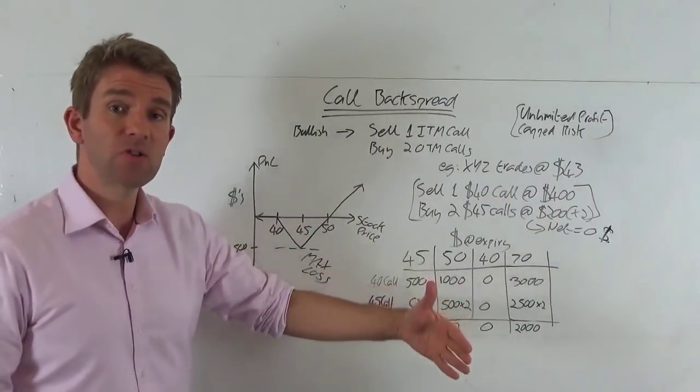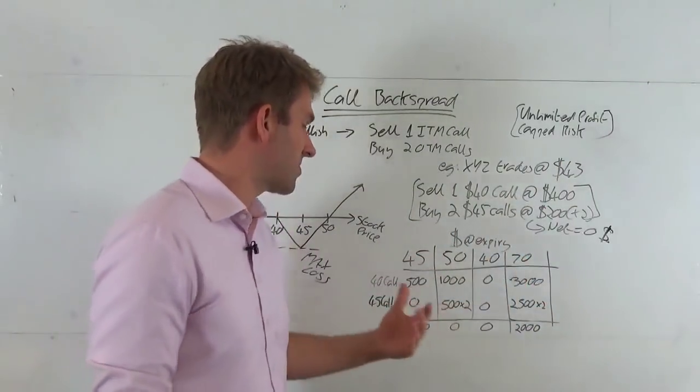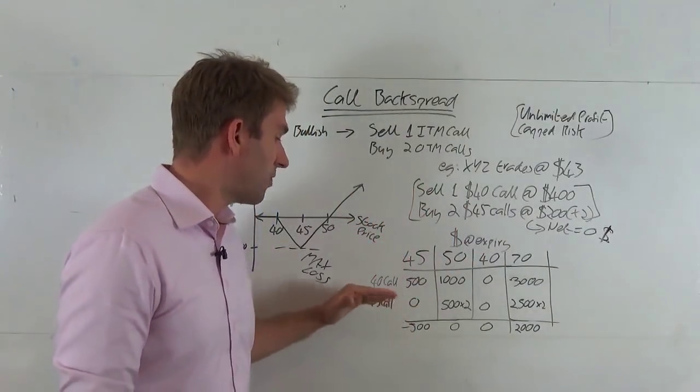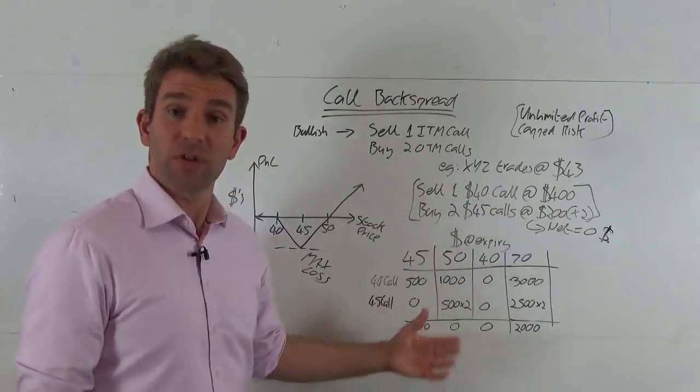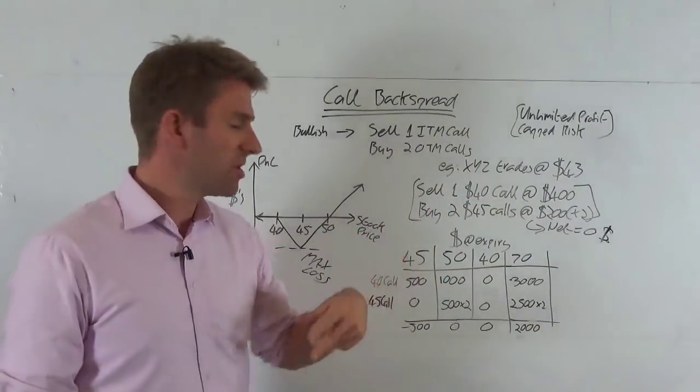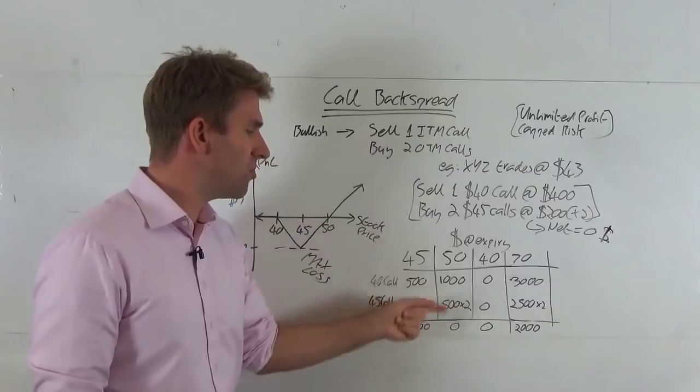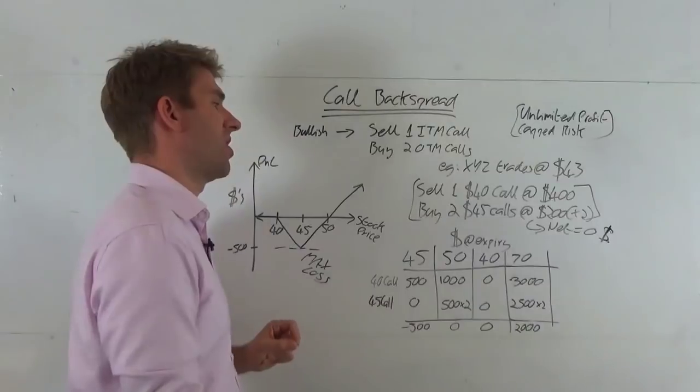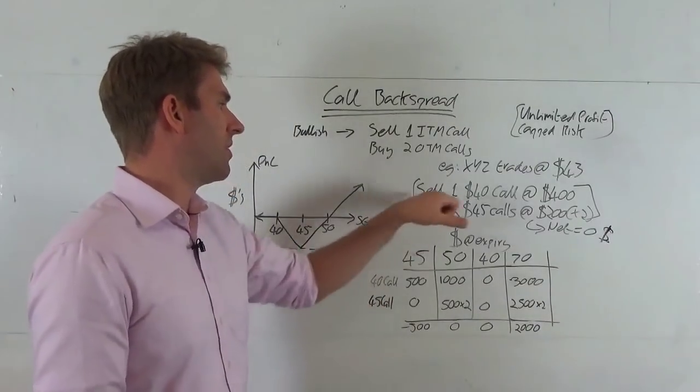So the 40 call's got $10 worth of value. It's a thousand bucks with the times a hundred, the 10 times a hundred shares, one contract. The 45 call is worth $5. That's actually $500. We've got two of those. So we've got a thousand dollars on that. So we've got $2,000, but don't forget we were short.